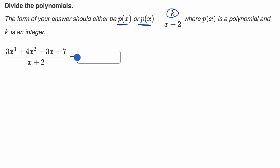All right, now let's work through it together. What we're trying to do is divide x plus two into 3x³ + 4x² - 3x + 7.